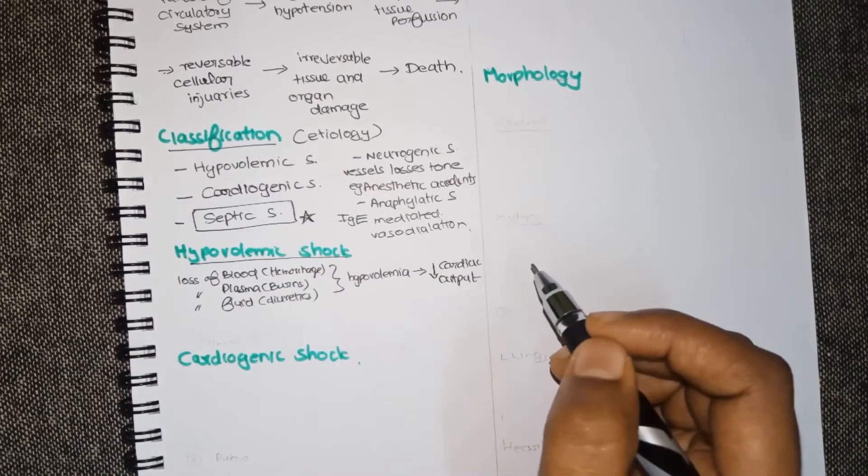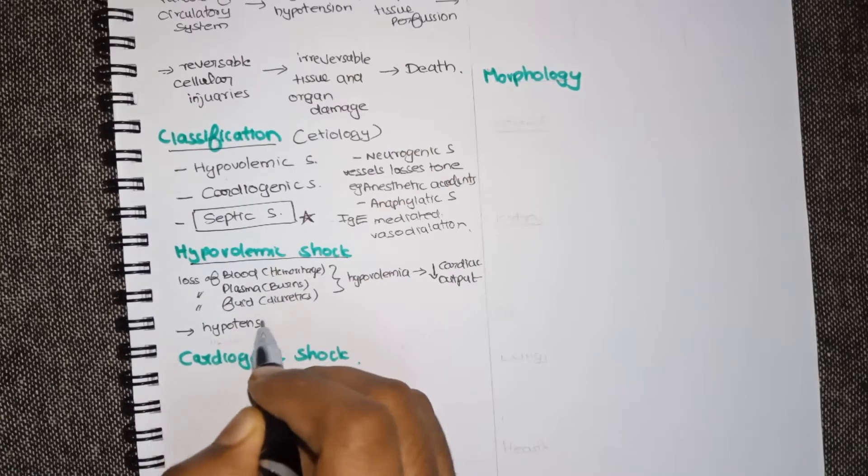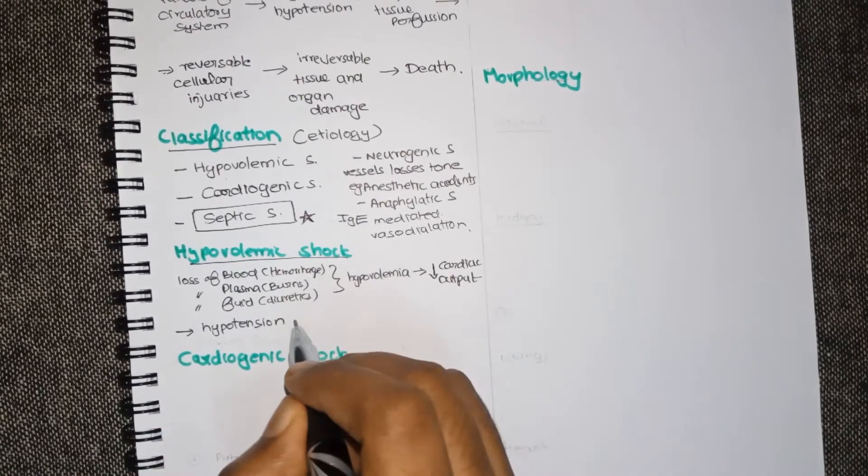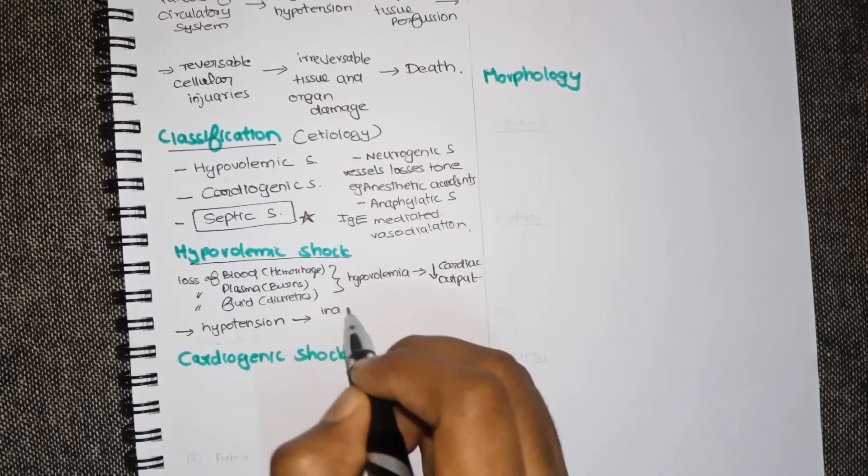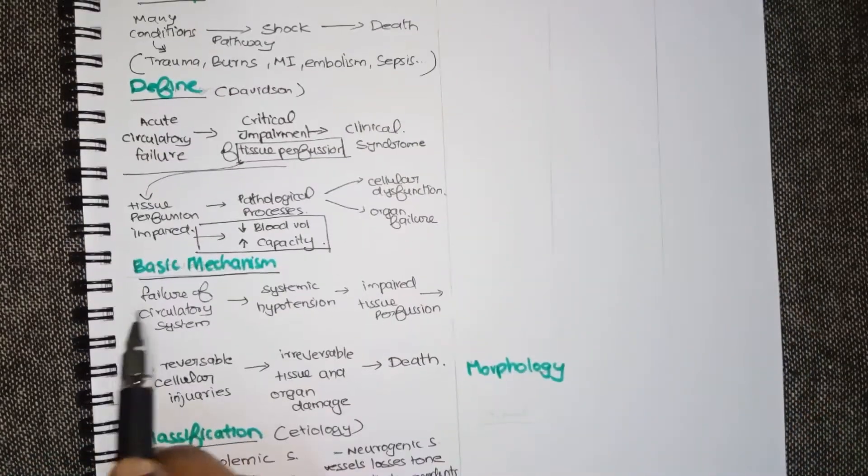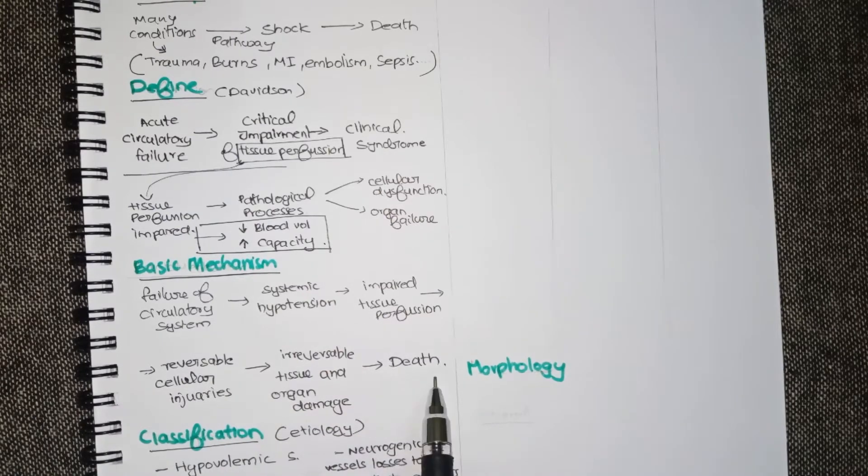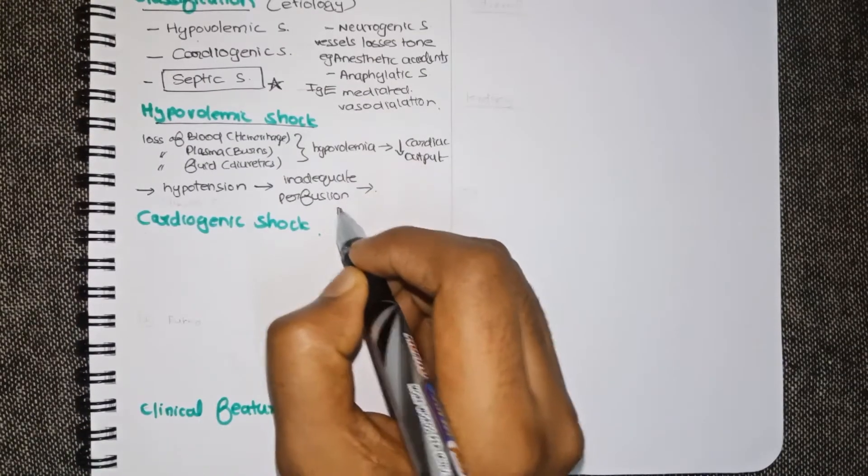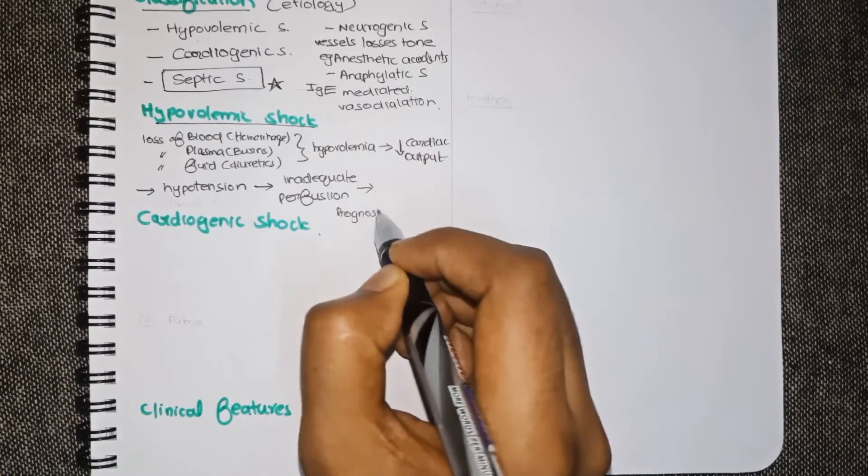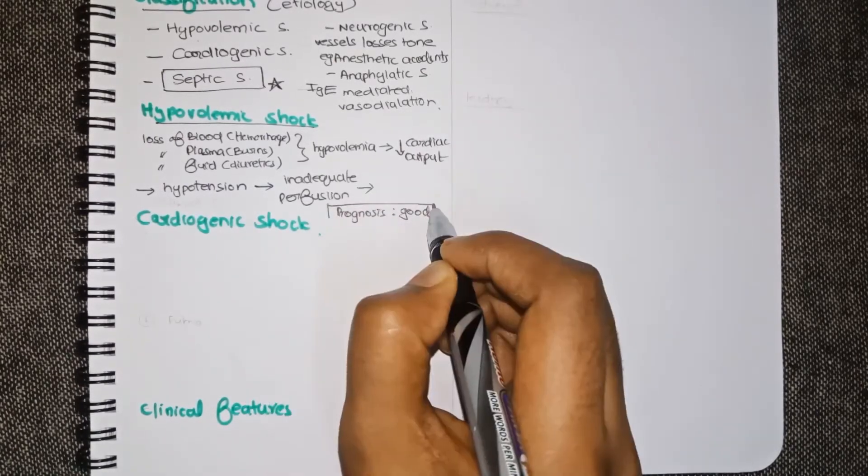Hypovolemia can cause a decrease in the cardiac output. As the cardiac output decreases it results in hypotension. As we told before the low blood pressure results in bad perfusion. It is coming in line with the basic mechanism that we told before. Since hypovolemia can be corrected by fluid and other methods its prognosis is very good.